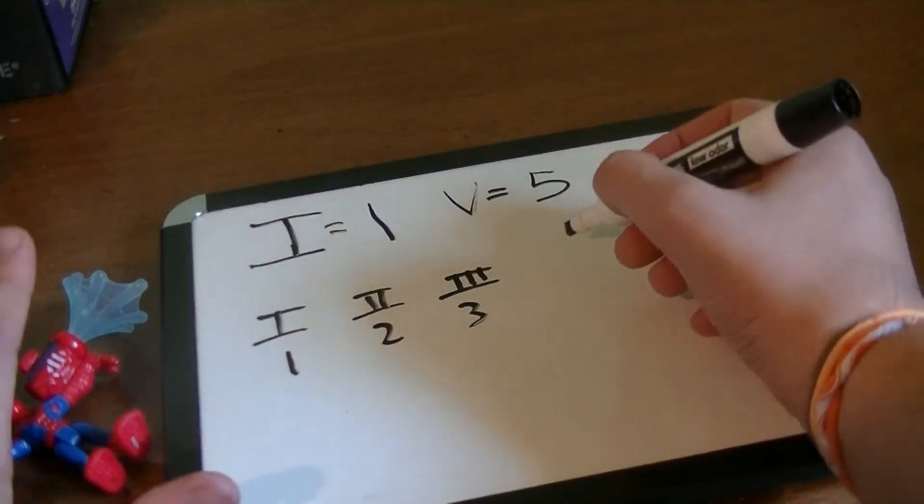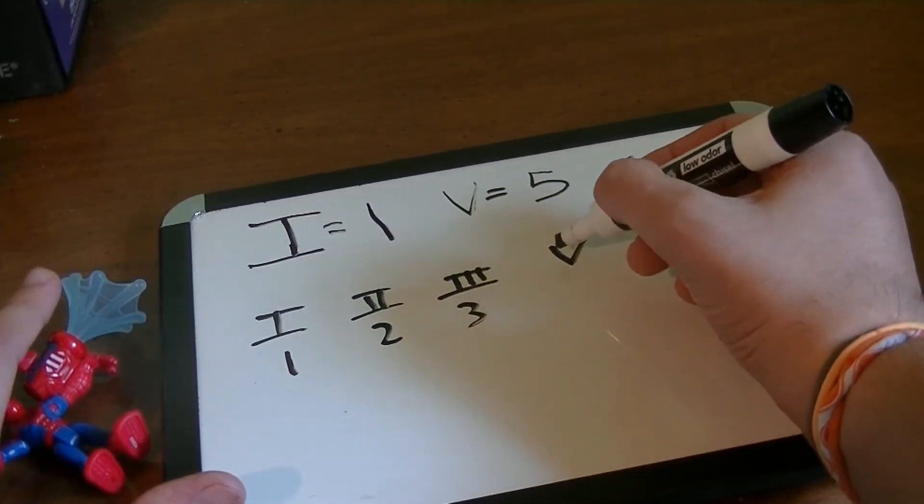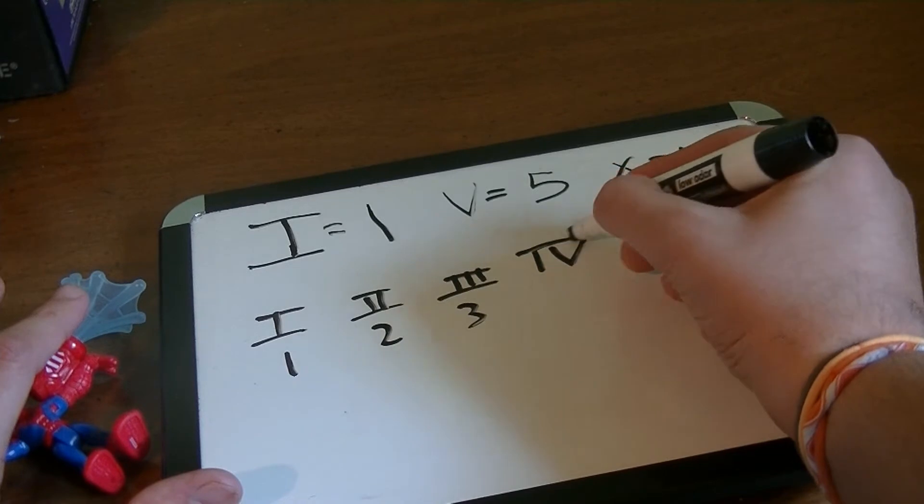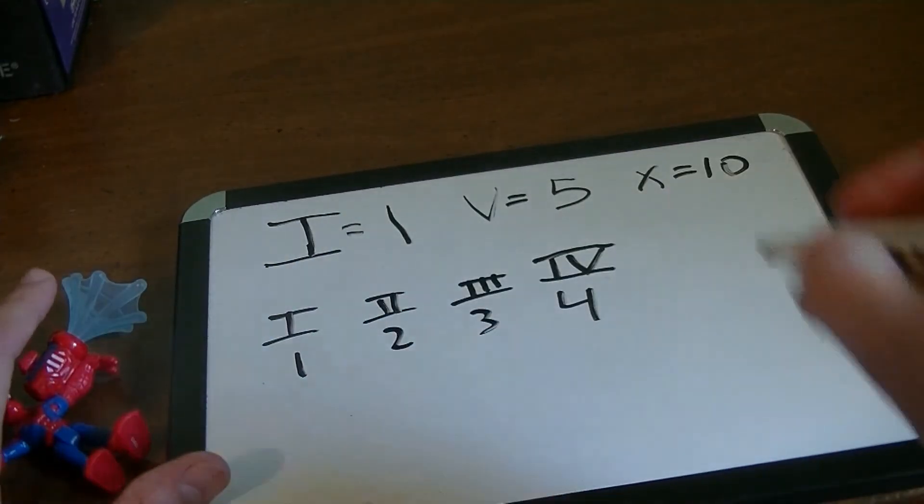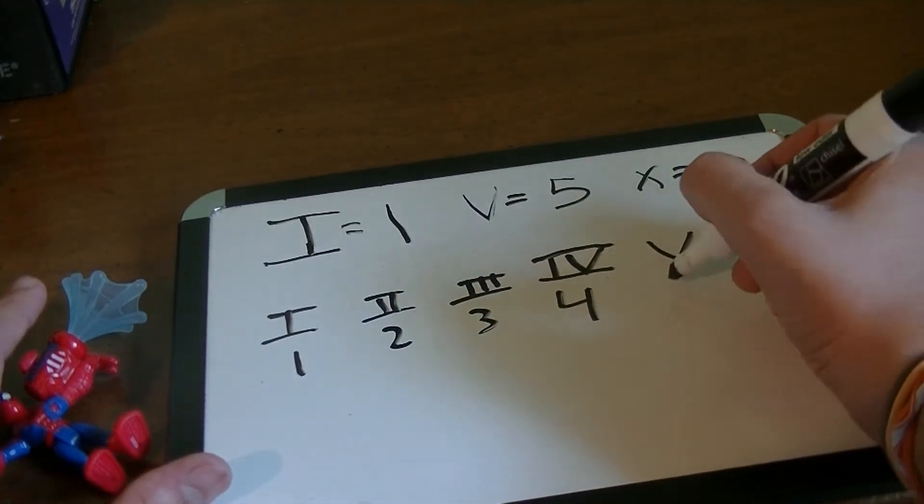There's some math with Roman numerals. We do a V, which means 5, but then we put an I before it, which means 4—like 5 minus 1 equals 4. And then the V is 5.